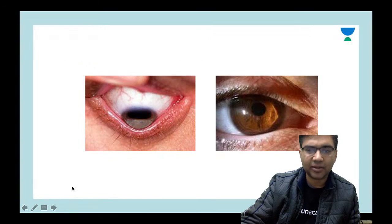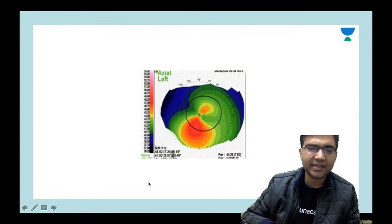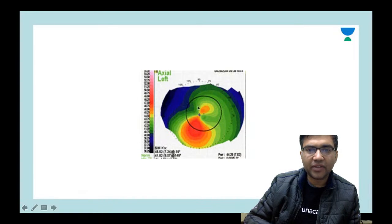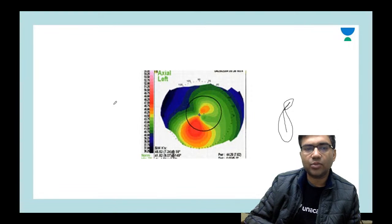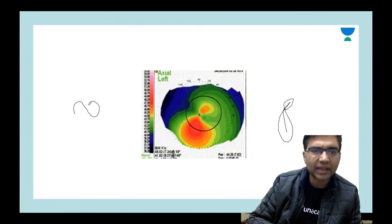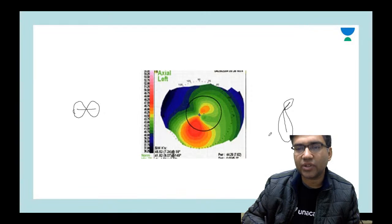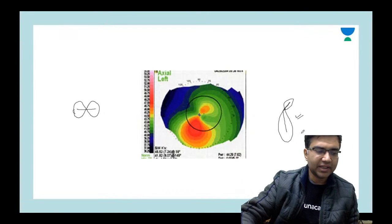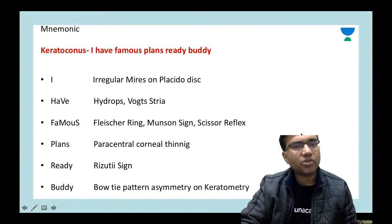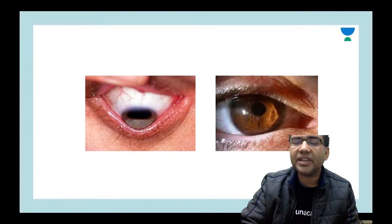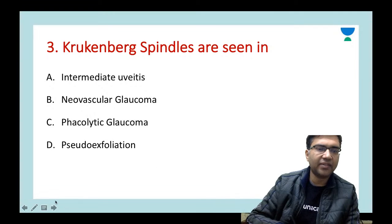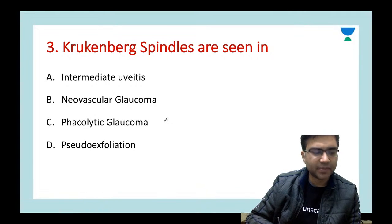'Buddy' in the mnemonic stands for the bow tie pattern asymmetry on keratometry. When we do corneal topography we can see an asymmetrical bow tie pattern — as opposed to a symmetrical bow tie which has equal horizontal and vertical meridians. This asymmetry is a key feature of keratoconus.